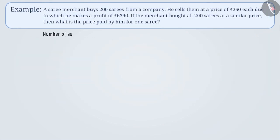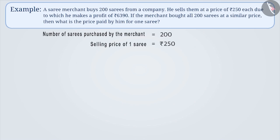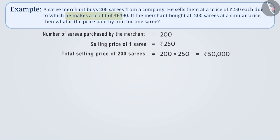The number of sarees purchased by the merchant is 200. He sold them at Rs. 250 each, which means the total selling price of 200 sarees is equal to 200 × Rs. 250, which is equal to Rs. 50,000. It is given that on selling 200 sarees, the merchant made a profit of Rs. 6,390. What we need to find out is the cost price of the sarees purchased by the merchant.